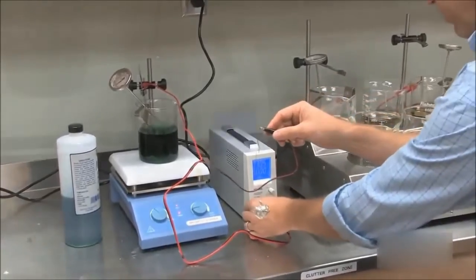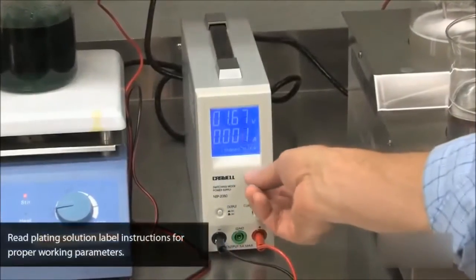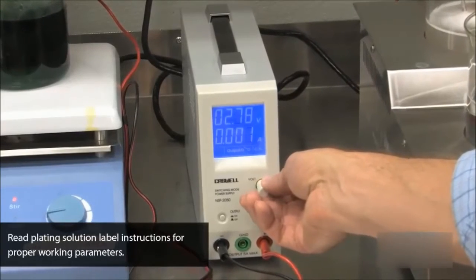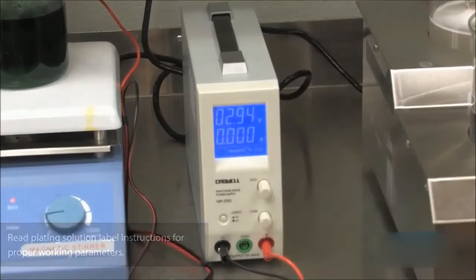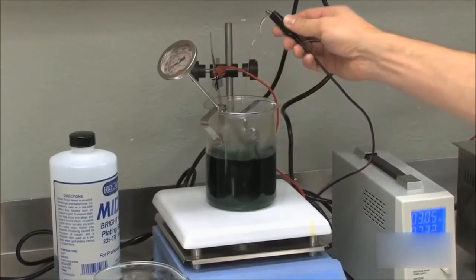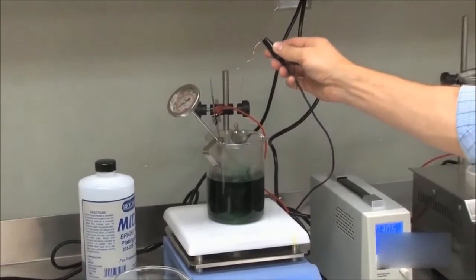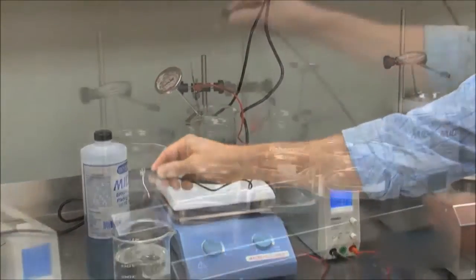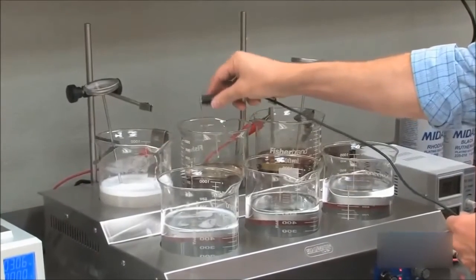In this demonstration, we will preplate a nickel strike onto the piece by heating nickel solution to 150 degrees Fahrenheit. Attach the handling wire to the negative lead and immerse the piece for a minute or until desired coverage is achieved. Make sure to rinse thoroughly in distilled water after the nickel strike, then give the piece another acid dip and rinse before the final plating.